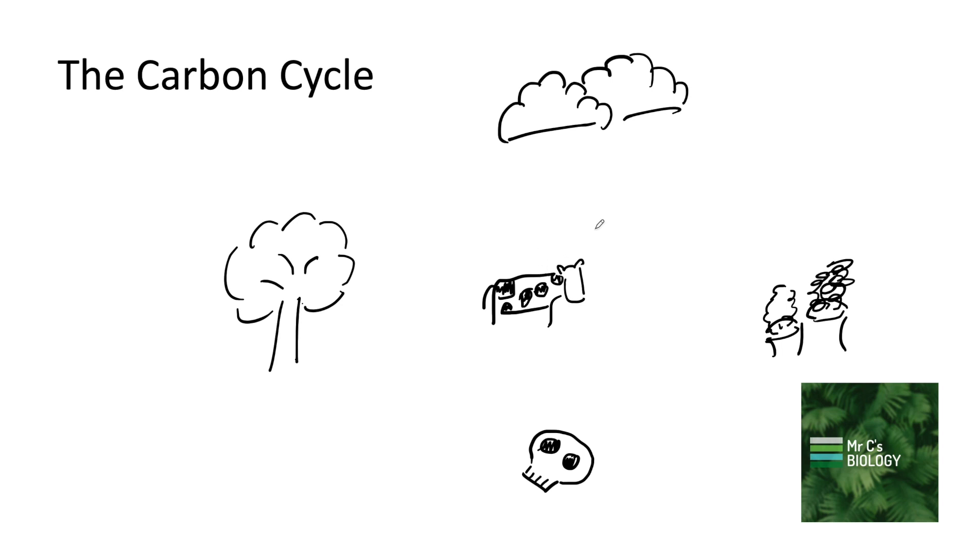If we start with humans or animals, we'll know that we breathe out a lot of carbon dioxide. Carbon dioxide ends up in the air from our own respiration and then ends up as carbon dioxide in the air.